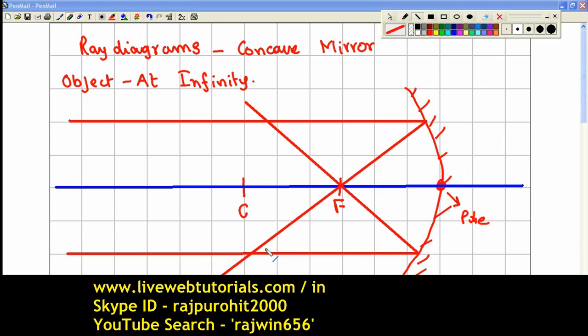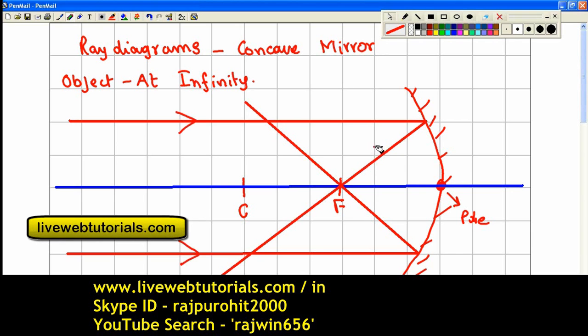Now you can see both of these rays after reflection they are meeting at F. These are the rays. I am always supposed to show the direction of arrow in which the rays are travelling. After reflection it is going to pass through the focus.